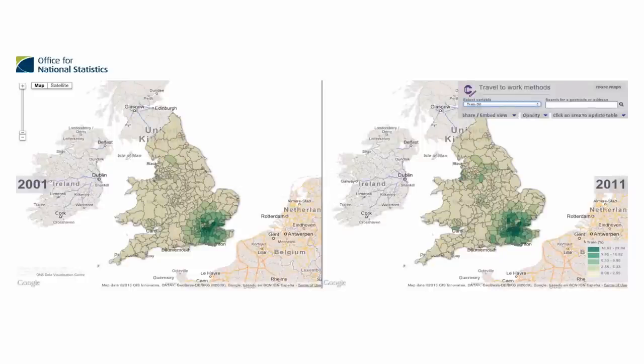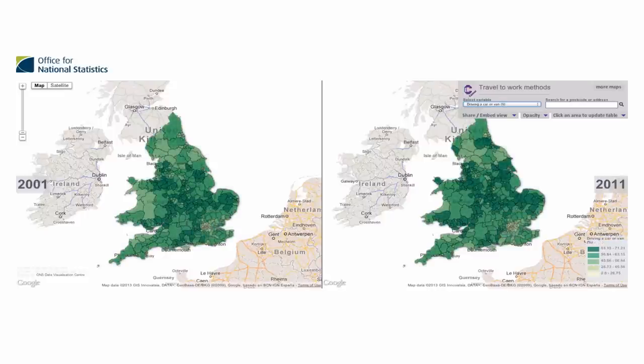Here's another example, to do with the way people travel to work. There's a map produced by the Office for National Statistics based on census data from 2001 and 2011, showing the proportion of people in each area of the country that travel to work by train. You can see from this picture that there's been a small increase in the proportion of people travelling to work by train, especially in the south-east. The equivalent map shows the proportion of people travelling to work by car, and the proportion has decreased in some parts of the country — in parts of the south-east, presumably because they're travelling to work by train instead.